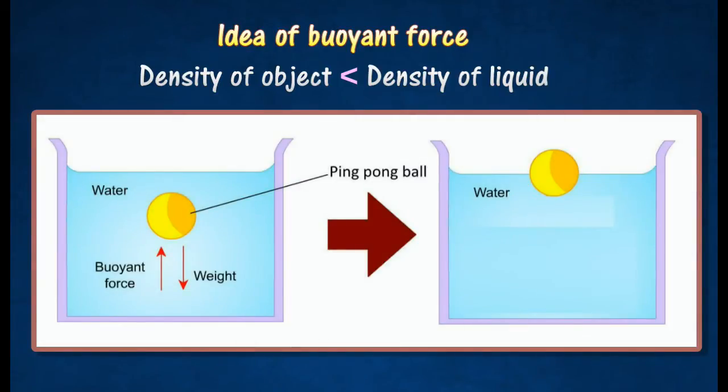For example, a ping pong ball pushed below the surface of the water and released will immediately rise to the surface. The ping pong ball is buoyant because it is acted on by a buoyant force due to the surrounding liquid.